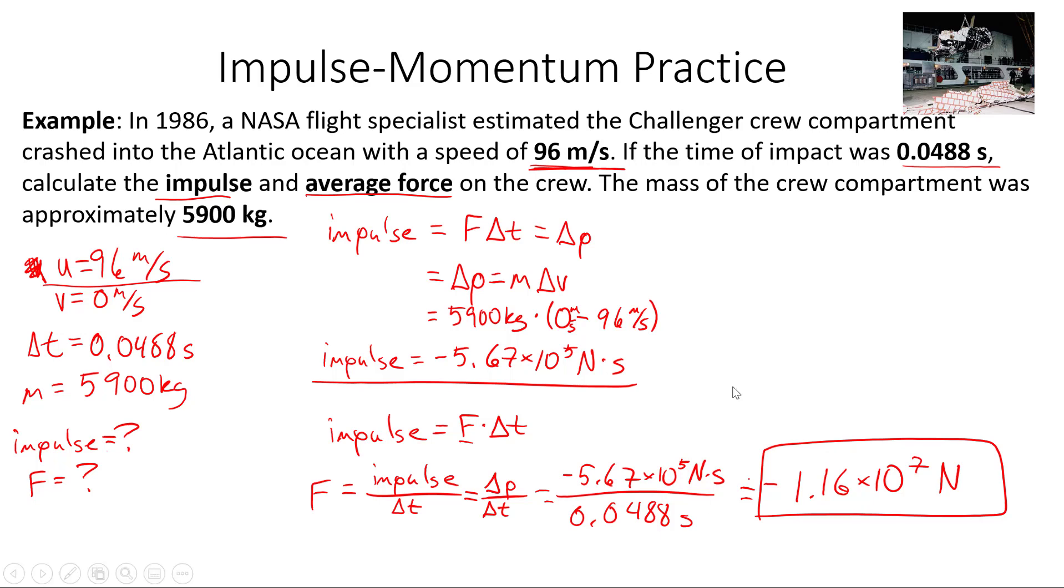It's an incredibly sad disaster. And again, the negative sign just tells us the direction of the force is up. We hit the water with some initial speed U. That means the force is going to be pushing up to slow us down.